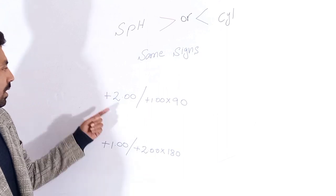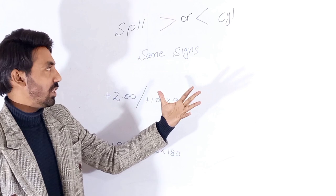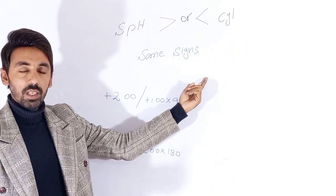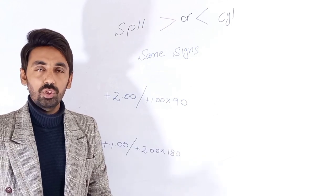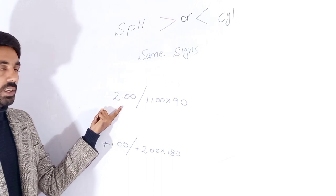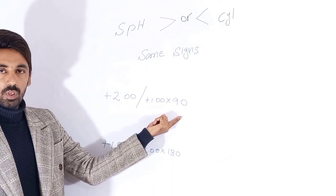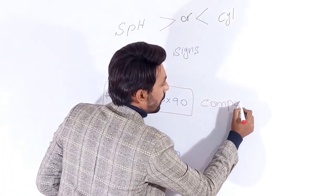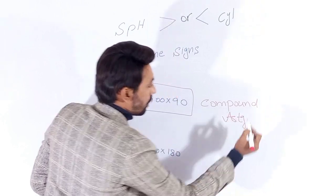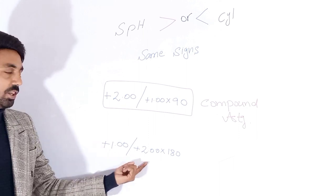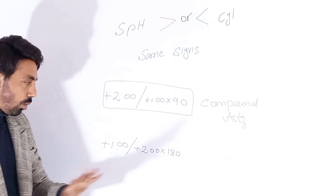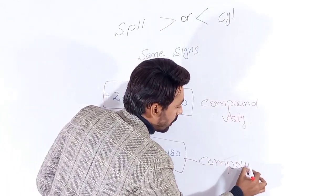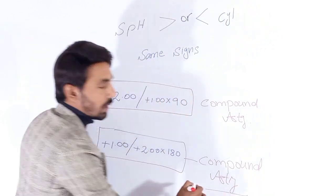In this example, if the spherical correction is greater or lesser than the cylinder but with the same sign, then the prescription would be compound astigmatism and there is no need to transpose or change the prescription. In the first prescription, the spherical correction is greater than the cylindrical correction at 90 degrees — no change needed, this is compound astigmatism. In the next example, the spherical correction is lesser and the cylindrical correction is greater at 180 degrees — again, no need to transpose, and this prescription is also compound astigmatism.